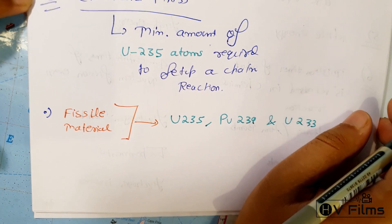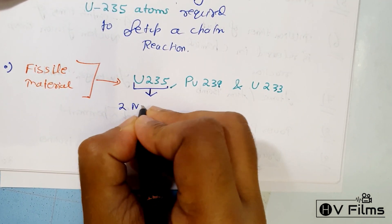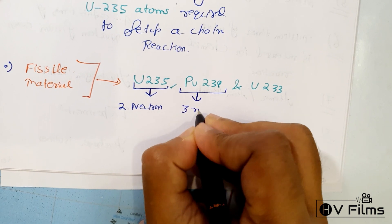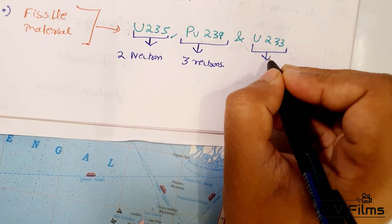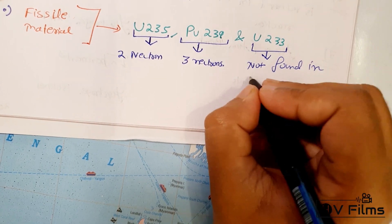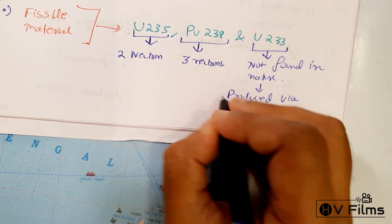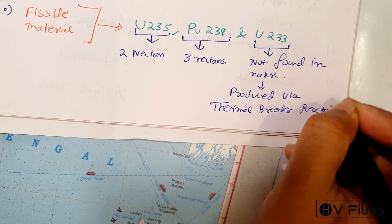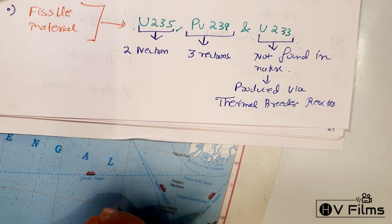Uranium-235 releases two neutrons when the atom is split. Similarly, when plutonium is split, it releases three neutrons. Uranium-233 is not found in nature; it is produced via thermal breeder reactors, where thorium-232 absorbs a neutron to form uranium-233.